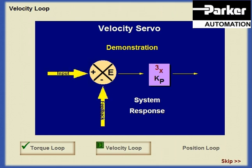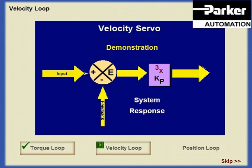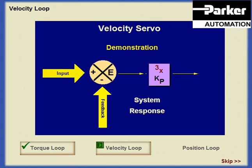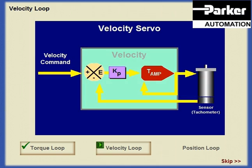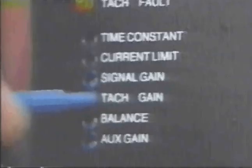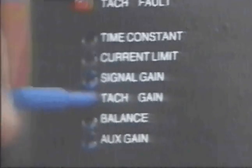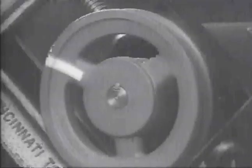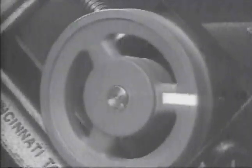The proportional gain amplifier determines actual system response in terms of RPMs per command signal volt. Velocity servo amplifiers typically include a tachometer gain adjustment. This feature allows the servo amplifier to accommodate feedback sensors of varying sensitivity. The minimum adjustment of tach gain provides stability and damping, improving the smoothness of low-speed systems.